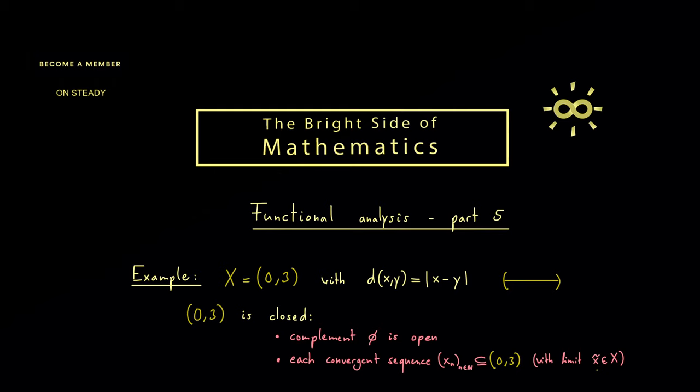What we proved last time was that the set is closed if the limit is also in the subset. Of course here you see immediately that this is true because the subset 0 to 3 is the whole space X.